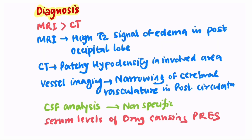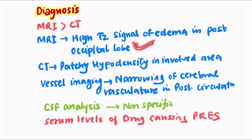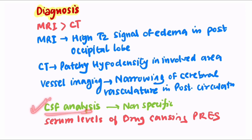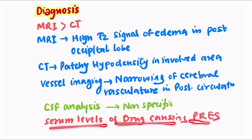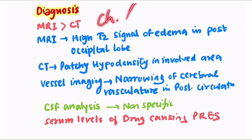For diagnosis, MRI is preferred over CT scan. MRI shows high T2 signal of edema in the posterior occipital lobe, but it can occur at any lobe. CT shows patchy hypodensity in the involved area. Vessel imaging such as angiography shows narrowing of the cerebral vasculature in the posterior circulation. CSF analysis is non-specific and therefore not useful. Serum levels of drugs causing PRESS, such as chemotherapeutic agents and calcineurin inhibitors, can also be checked.